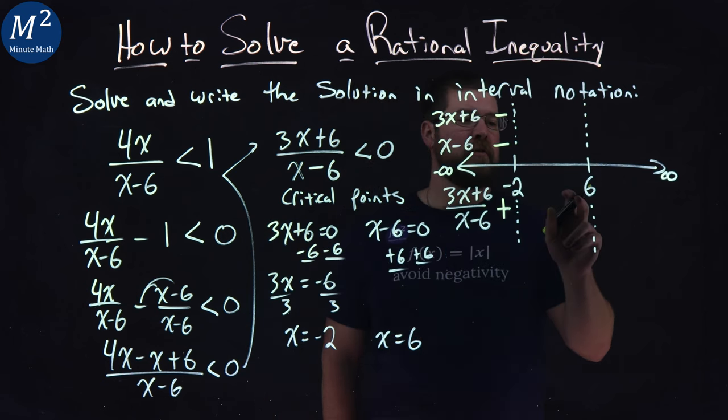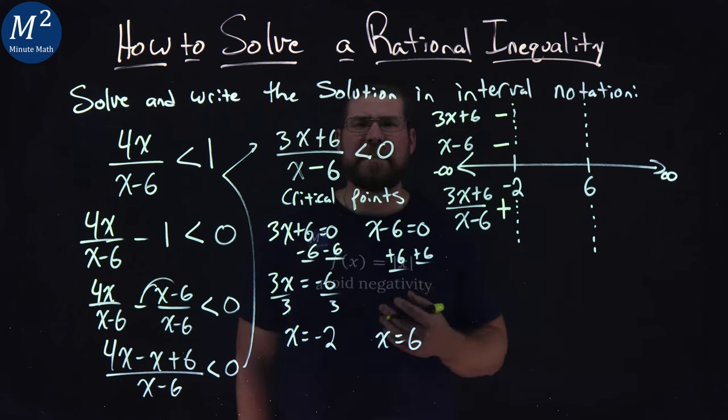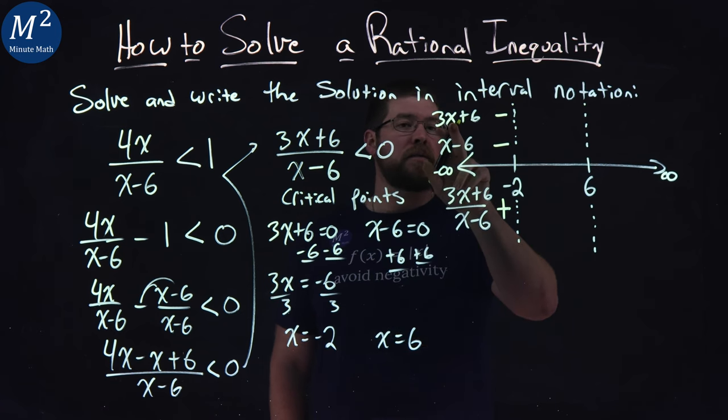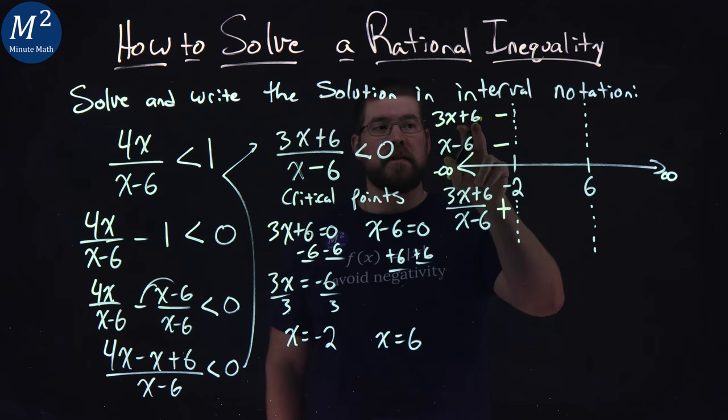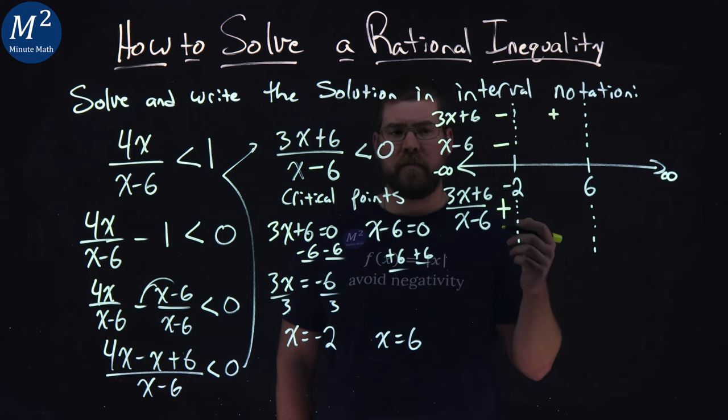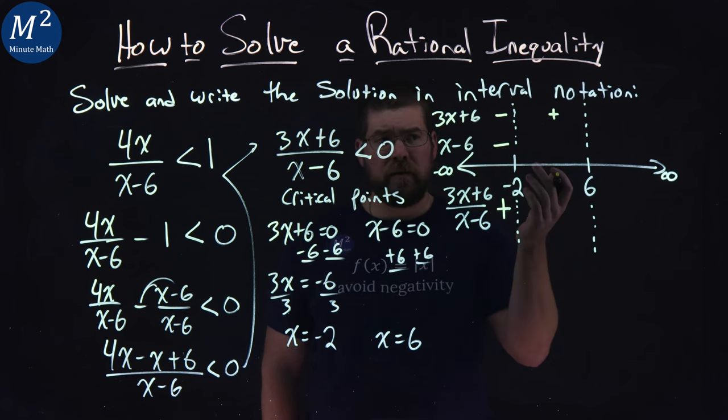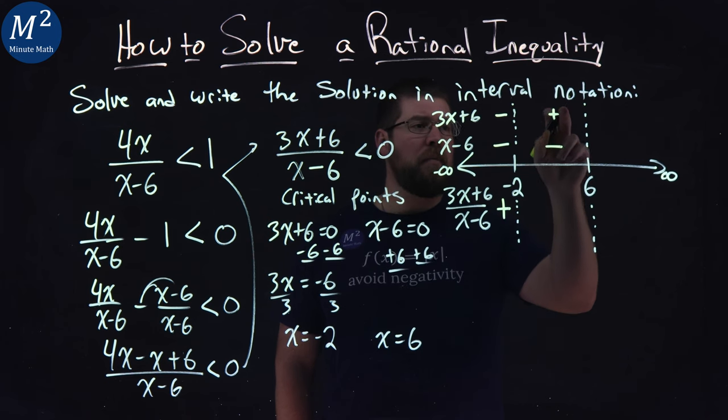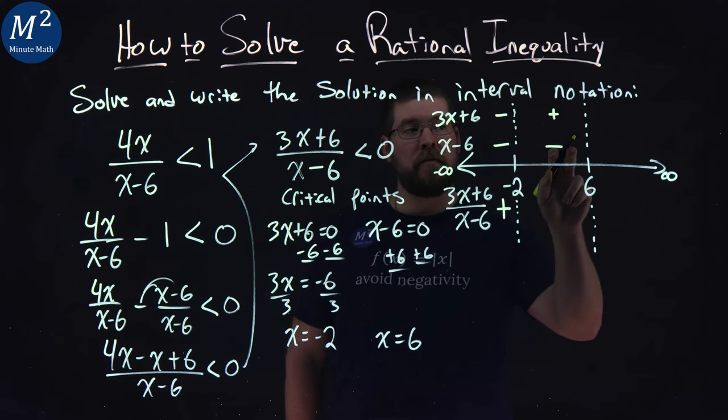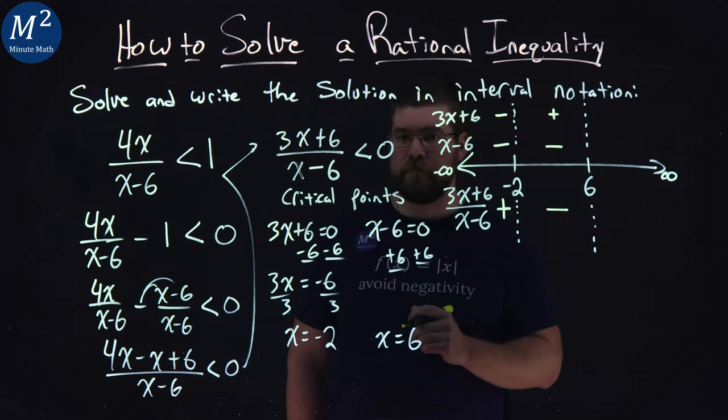Now what about from negative 2 to positive 6? Let's pick 0. That's an easy one. 3 times 0 is 0, plus 6 is positive 6. 0 for x down here, 0 minus 6 is negative 6. A positive divided by a negative is a negative.